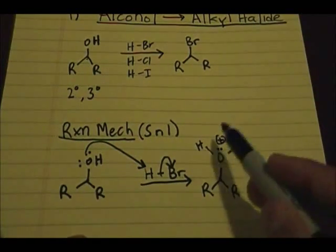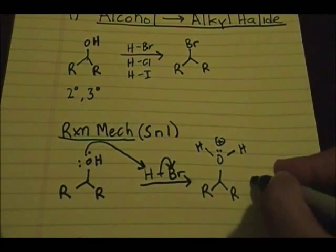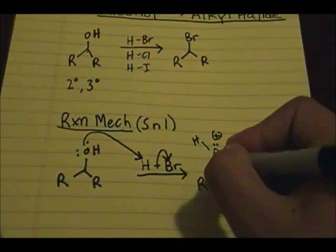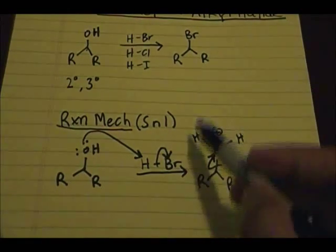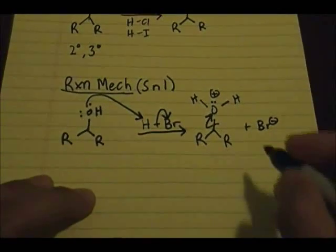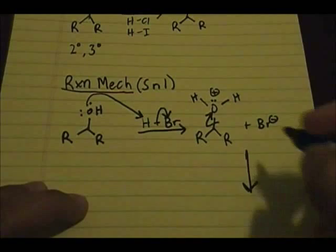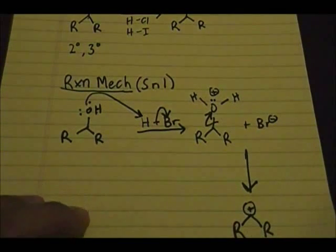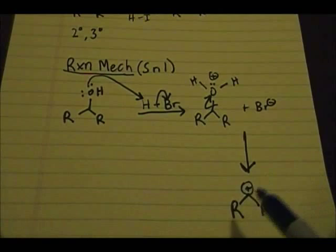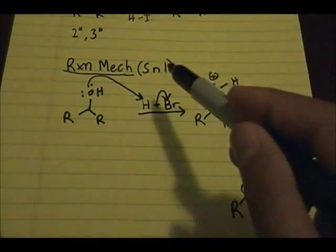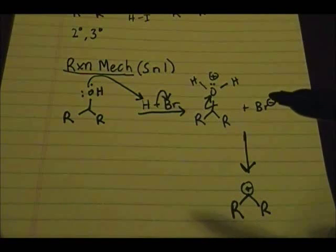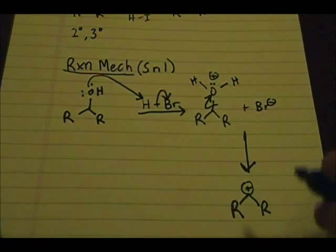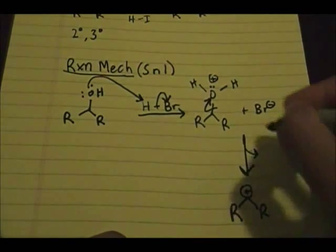If you calculate the formal charge for oxygen it will be positive one, and you have Br minus. Now what happens is that you kick off this group — the soon-to-be H2O group — and the product of this step is basically a carbocation intermediate. You form the secondary carbocation intermediate, which makes sense since it's SN1. The more stable the carbocation intermediate, the more groups attached to the carbon where the positive charge is located. A byproduct of that step is water.